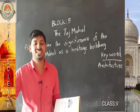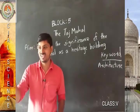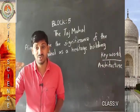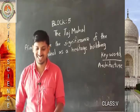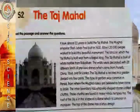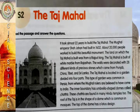For a detailed discussion, we are going to read a passage about Taj Mahal. All of you take your workbook and listen clearly, then you can understand more points about Taj Mahal. It took almost 22 years to build the Taj Mahal. The Mughal emperor Shah Jahan had it built in 1632. About 20,000 people worked to build this beautiful monument. The land on which the Taj Mahal is built was from a Rajput king.